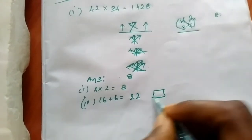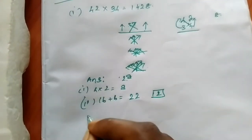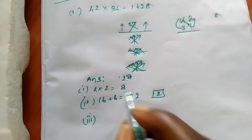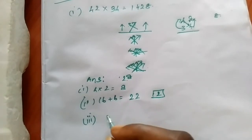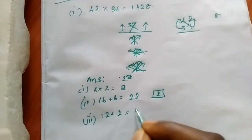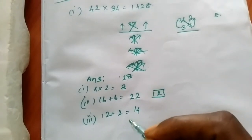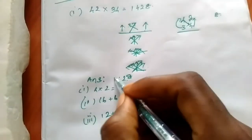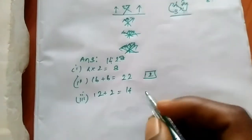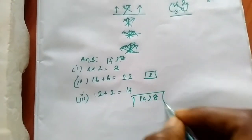2 in memory, 2 as answer. Next, third step: 4 x 3 is 12, plus 2 (memory) is equal to 14. It's very simple. The answer is 1428.